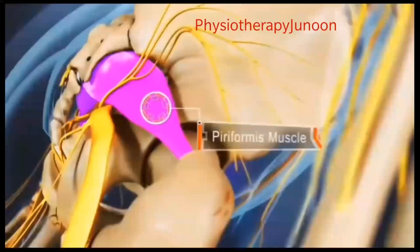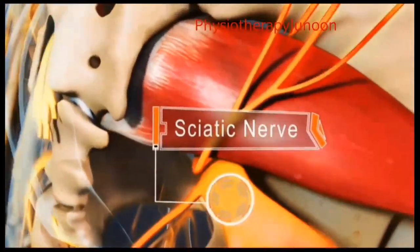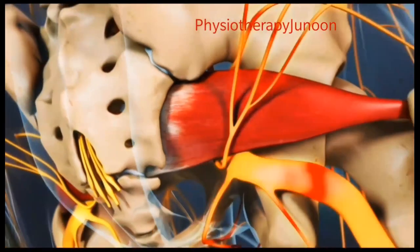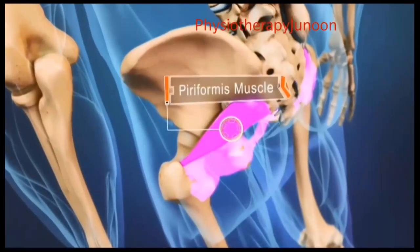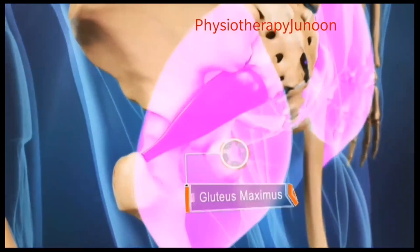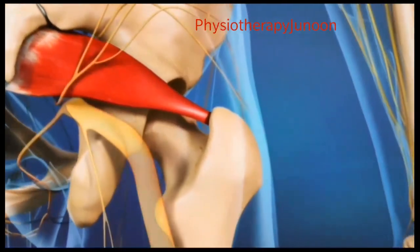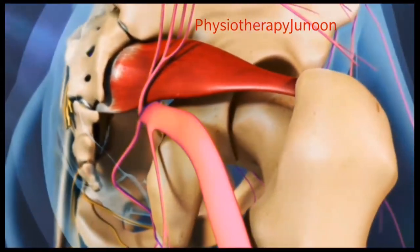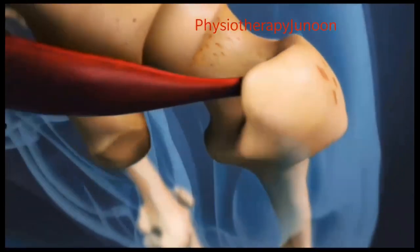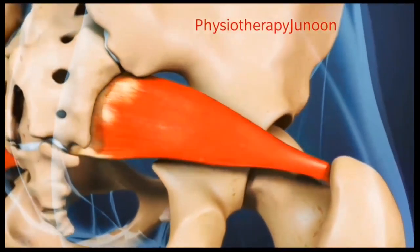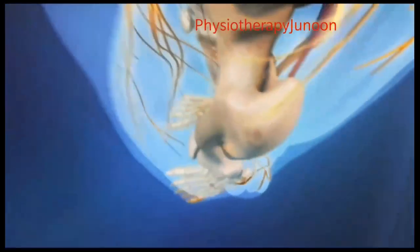Piriformis syndrome is a condition in which the piriformis muscle is located in the buttock region. As you can see in the picture, the sciatic nerve passes through the upper part. Here you see the piriformis muscle, the gluteus maximus muscle. The sciatic nerve symptoms help diagnose the muscle when the muscle is tight or in spasm, which may present like this.